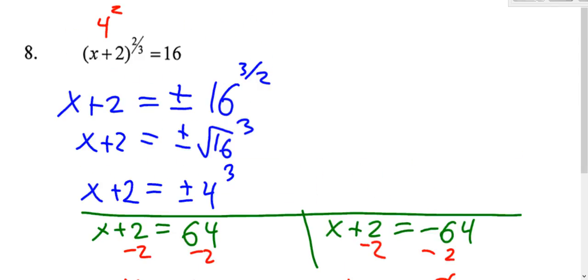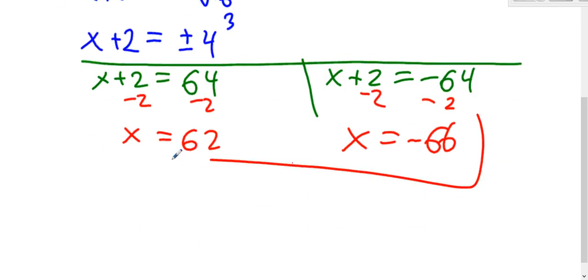Negative 66 plus 2 is negative 64. The cube root of negative 64 is negative 4. But then negative 4 squared is still positive 16. It still works. So they both work, 62 and negative 66.